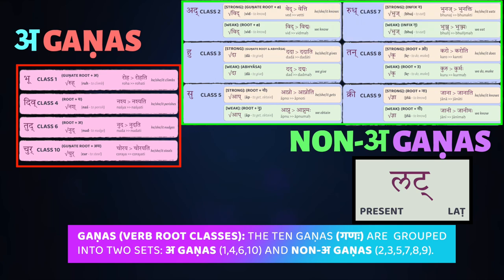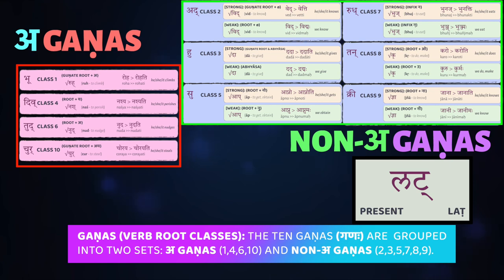The other classes — 2, 3, 5, 7, 8, and 9 — are known as the non-a-gaṇas. As the name suggests, they don't involve the addition of the letter 'a', the akāra, in forming your stem. There are also further complications in these which make them a lot harder to learn than the a-gaṇas.